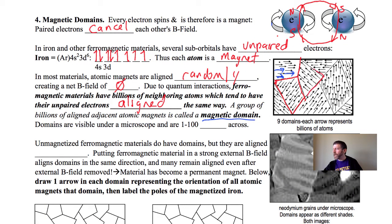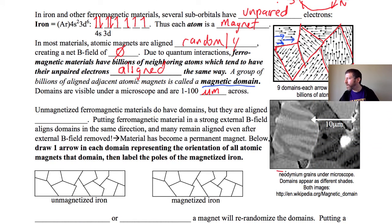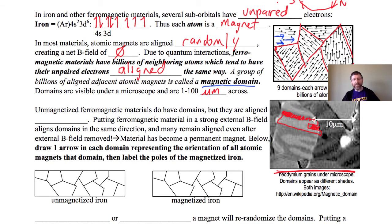Magnetic domains are visible under a microscope — they're typically one to a hundred micrometers across. Here's an actual picture: wherever you see a different color, that is one domain — a section of atomic magnets all aligned the same way. This scale bar right there is 10 micrometers, so you can see how big the domains are.